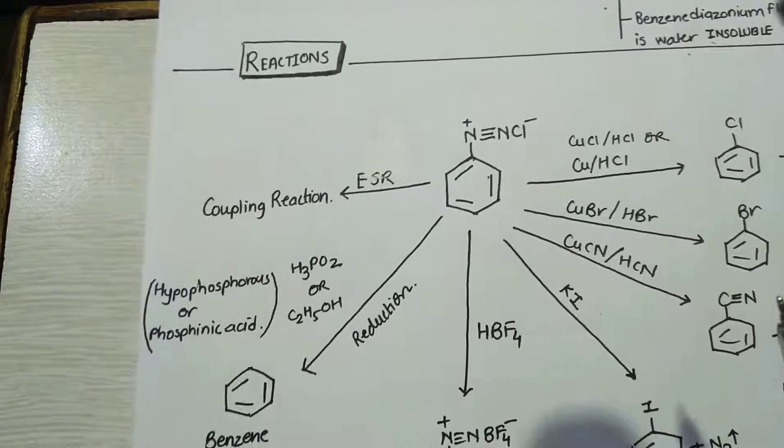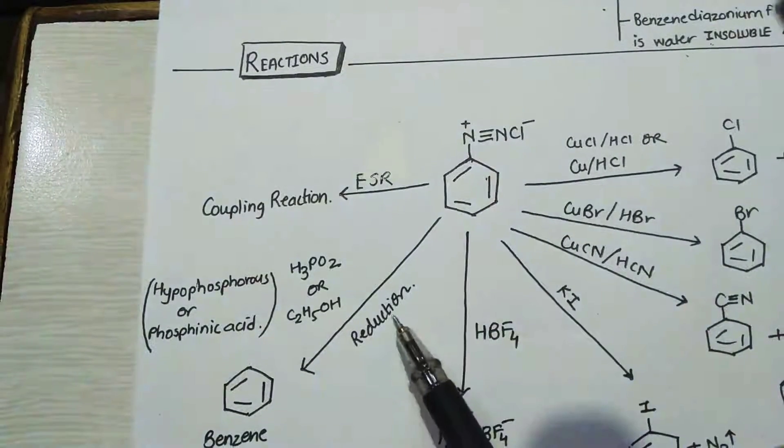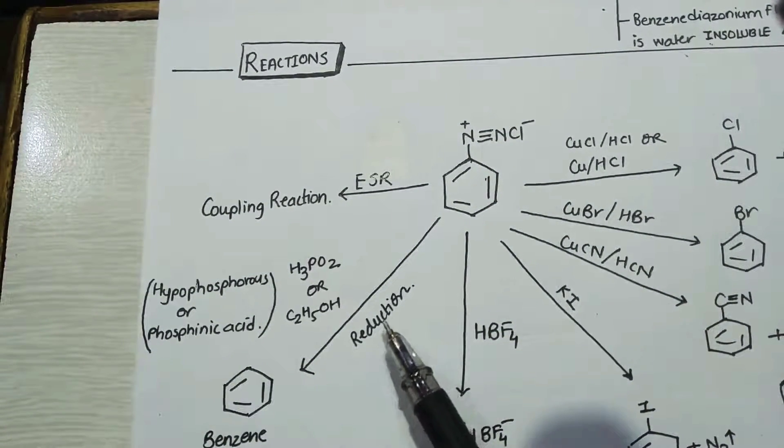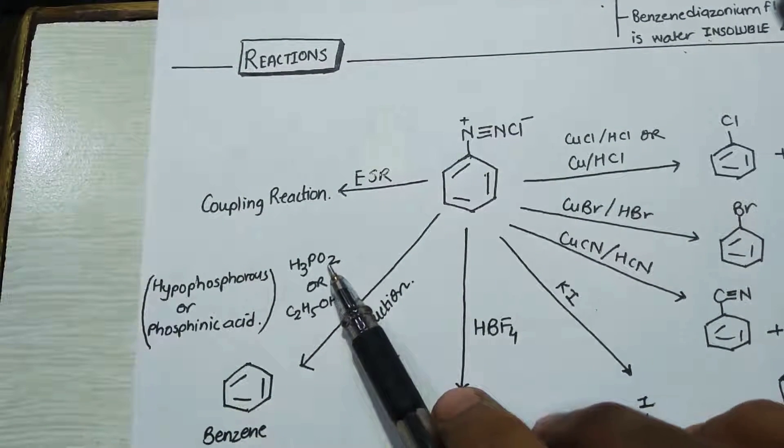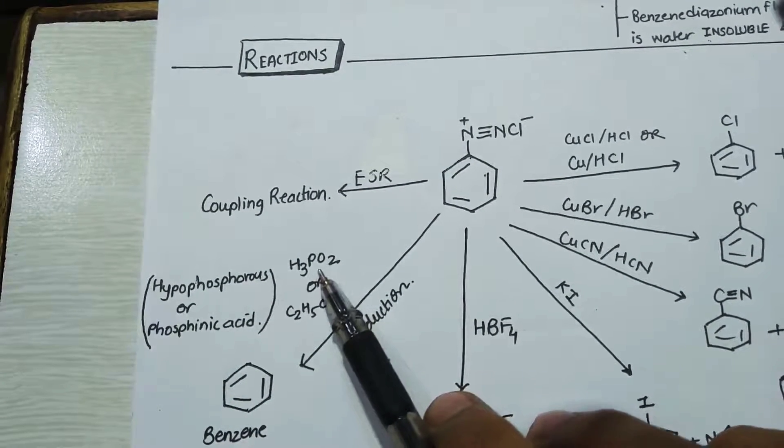Now coming on to reduction of diazonium chloride. If diazonium chlorides are reduced using phosphinic acid, which is also called